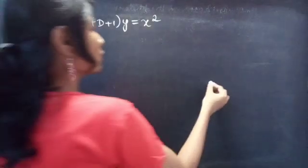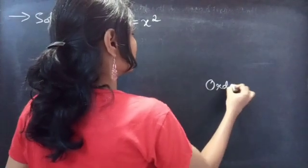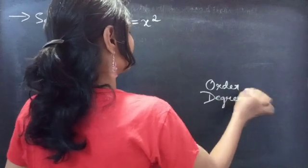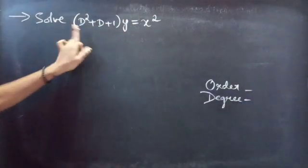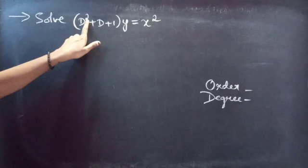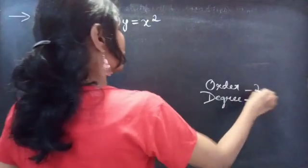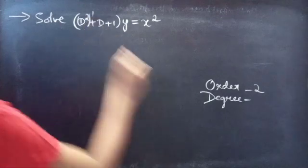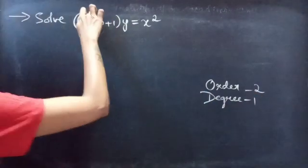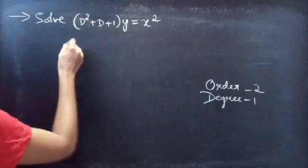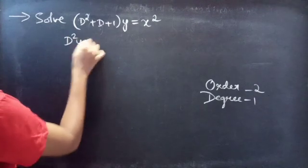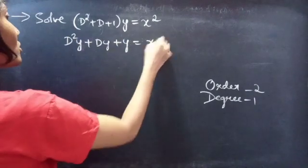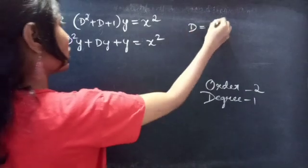Firstly, let's find the order and degree of the given differential equation. Identify the highest derivative here — D² is the highest derivative, so the order will be 2. The highest power of the highest derivative is the degree. Degree is 1. Now I'll write the given differential equation as D²y + Dy + y = x². We know that D is a differential operator.